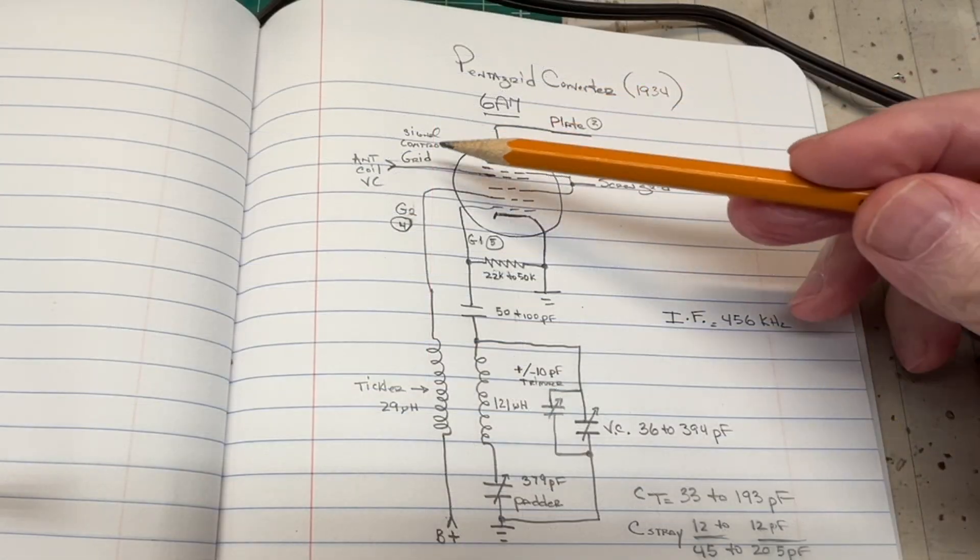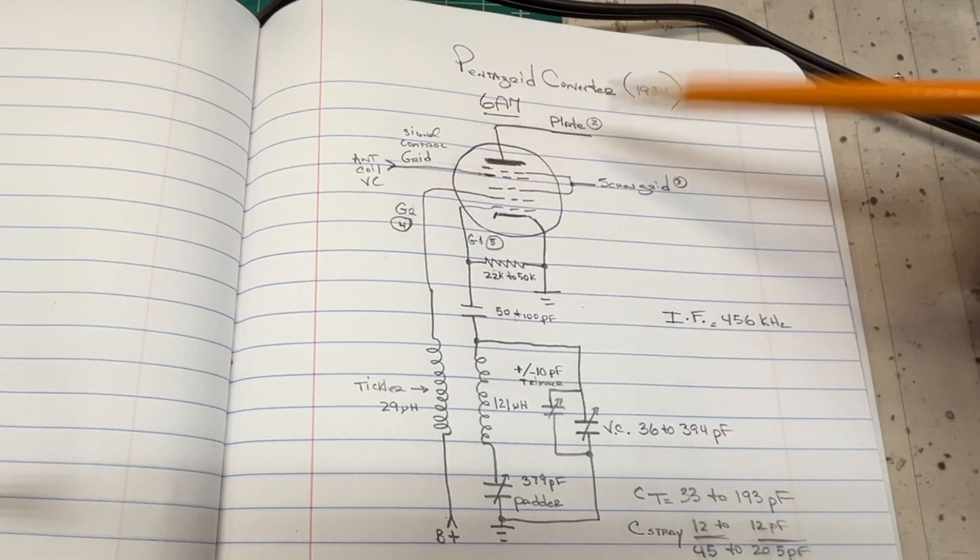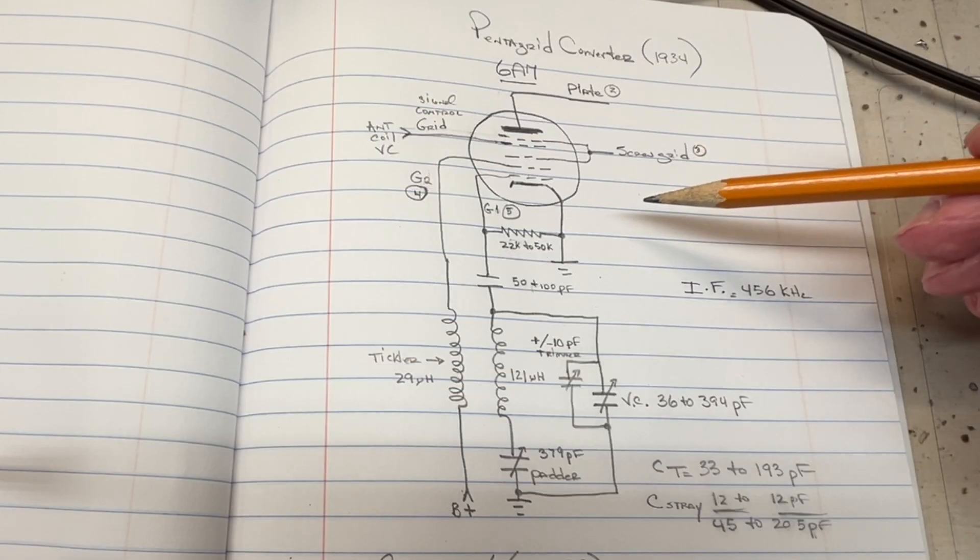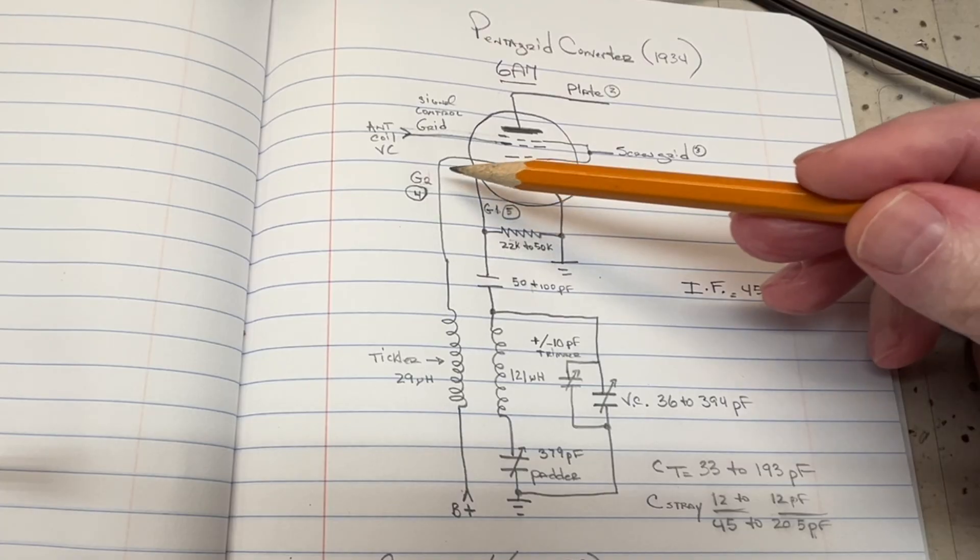You can see we've got our input signal referred to as the signal or control grid that would come from the antenna coil. We've got a screen grid connection as well,